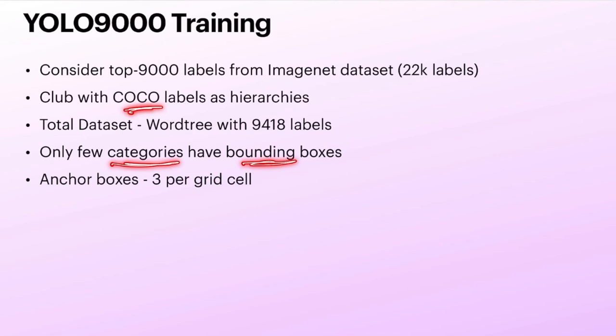But because of the tree hierarchy, if COCO says that it is a dog with a bounding box and the classification says it is a German Shepherd, then the same box will also apply to German Shepherd. So the model reuses those bounding boxes. And because there are more number of labels now, we need to predict classes and boxes for all of those.